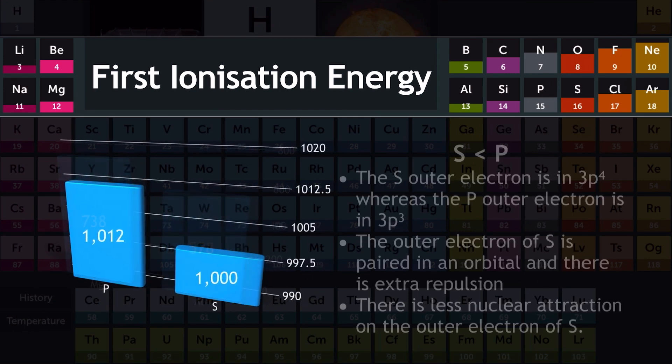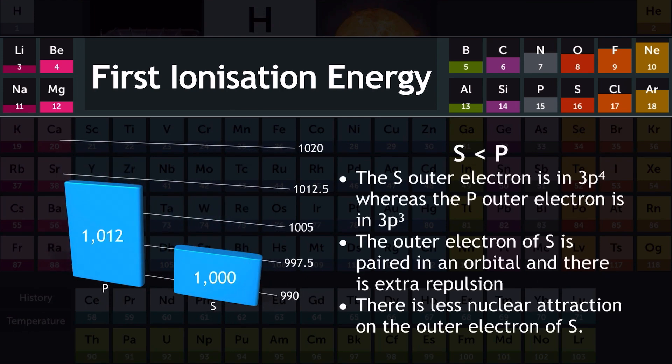The next anomaly is that the first ionization energy of sulfur is lower than that of phosphorus. This anomaly provides evidence of orbitals. Sulfur's outer electron is in 3p4, whereas phosphorus's outer electron is in 3p3. The outer electron of sulfur is paired in an orbital, and this causes repulsion, meaning there is less nuclear attraction on the outer electron of sulfur.